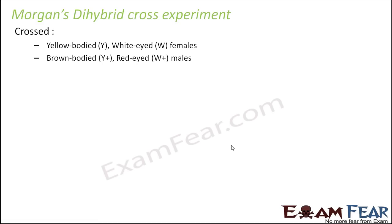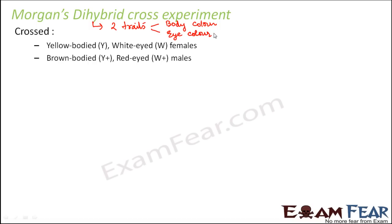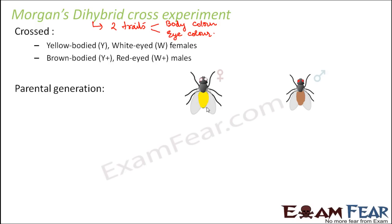Morgan crossed yellow-bodied white-eyed females with brown-bodied red-eyed males. The two traits he considered were body color and eye color, making it a dihybrid cross. Body color could be either yellow or brown — brown is dominant over yellow. Eye color could be red or white — red is dominant over white. So the parental generation was yellow-bodied white-eyed females and brown-bodied red-eyed males.